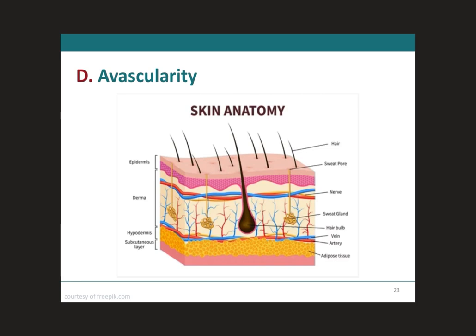Next, we have avascularity. Avascularity means that there are no blood vessels — vascularity means blood vessels and 'a' means no. We can see the epidermis, which is formed by epithelial tissue. Below the epidermis is the dermis, where we have all the blood vessels — veins in blue and arteries in red. These blood vessels supply nutrients to the epithelium above. The nutrients pass from the dermis, which is the connective tissue, to the epidermis, which is the epithelial tissue, by diffusion. We will talk more about this when we get to the integumentary system module.